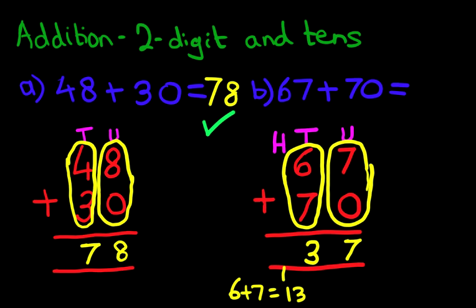Well, in the hundreds column, there is nothing here, and there is nothing here. But there is 1 here. So, we just add 1. 0 plus 0 plus 1 is 1. And that is our answer.